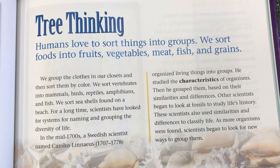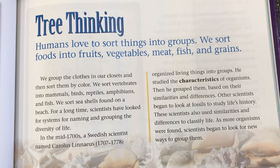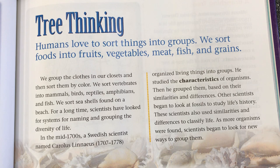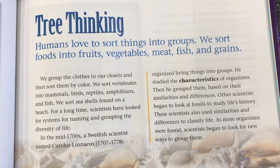In the mid-1700s a Swedish scientist named Carolus Linnaeus (1707 to 1778) organized living things into groups. He studied the characteristics of organisms, then grouped them based on their similarities and differences. Other scientists began to look at fossils to study life's history. These scientists also used similarities and differences to classify life. As more organisms were found, scientists began to look for new ways to group them.